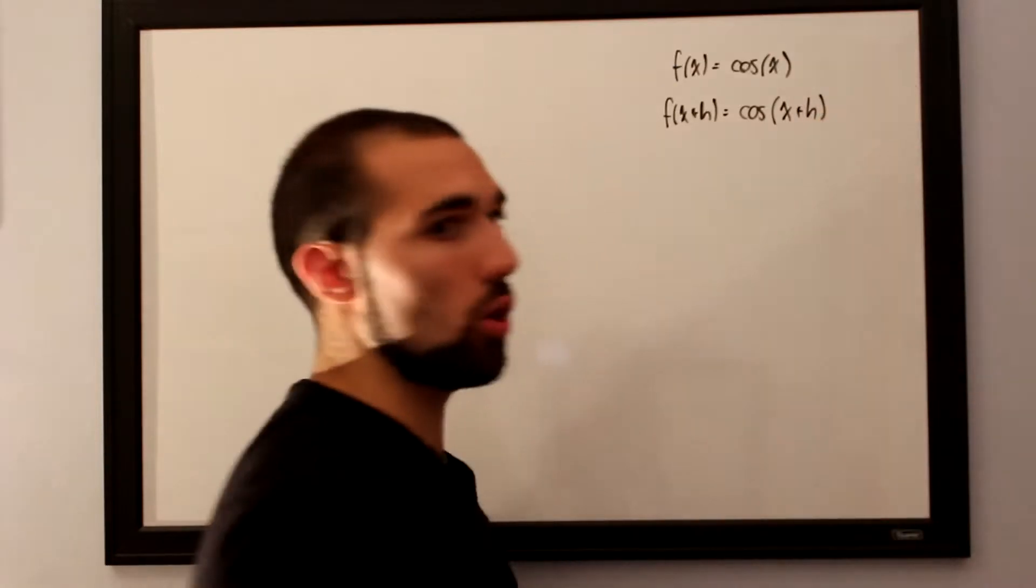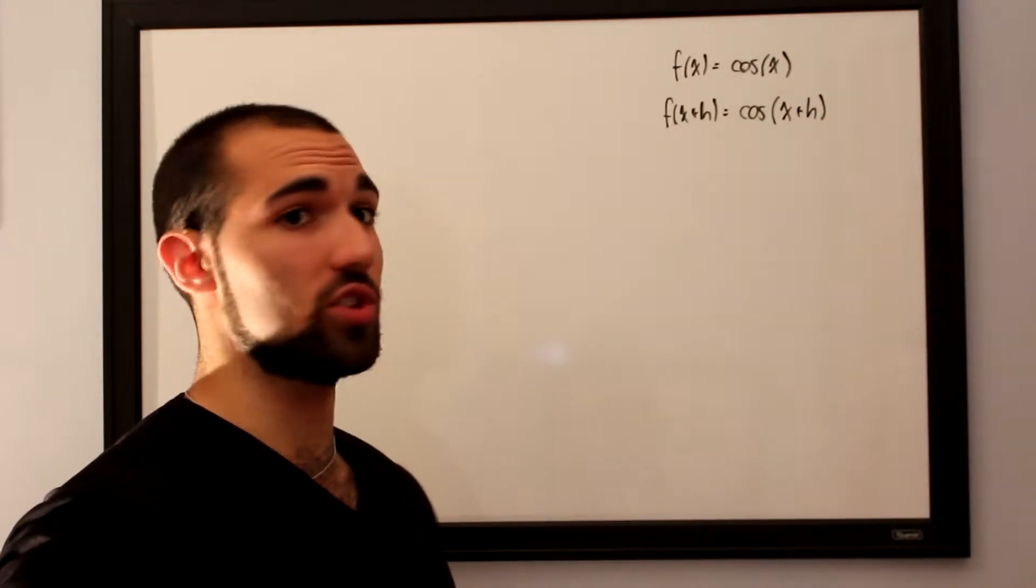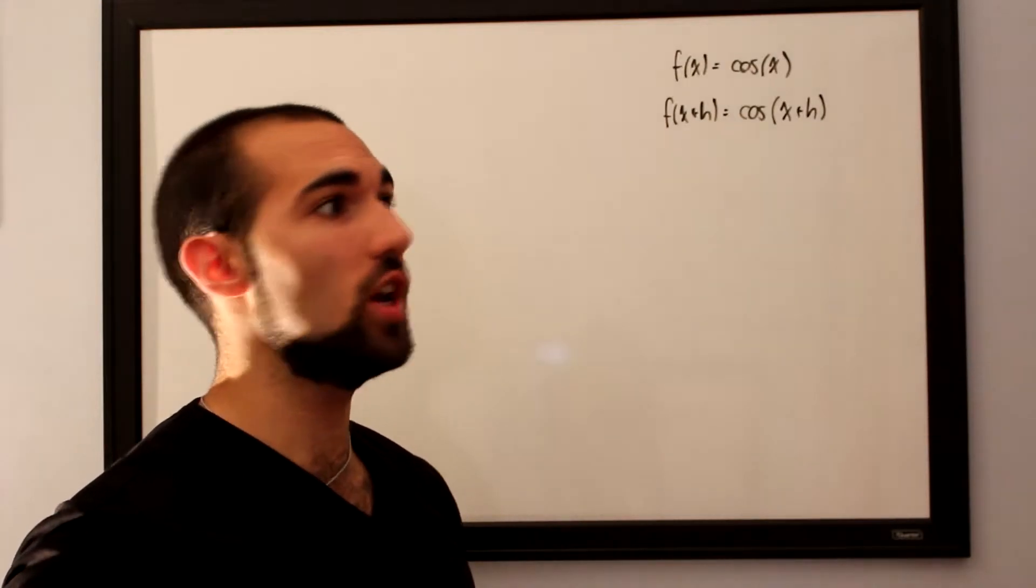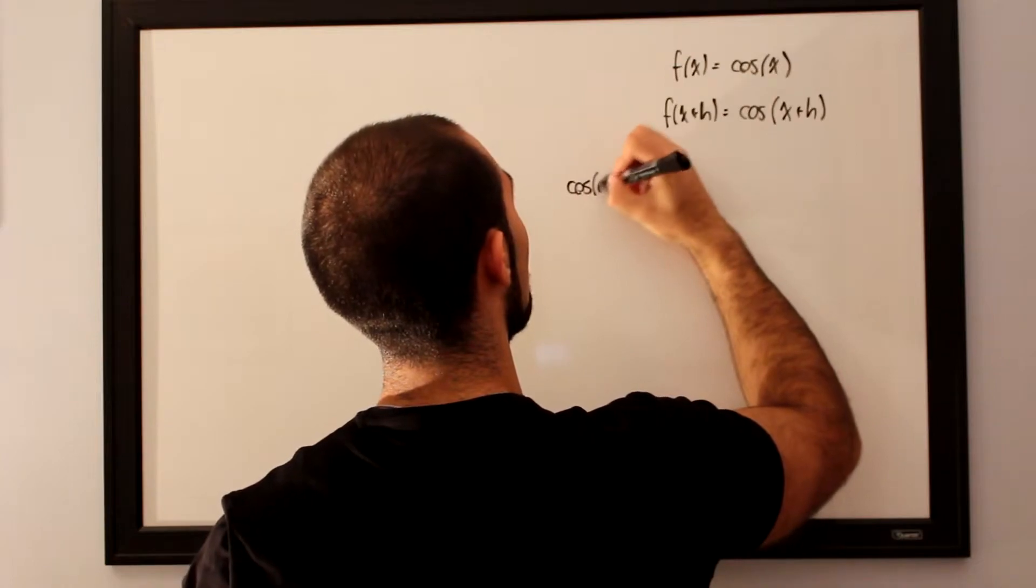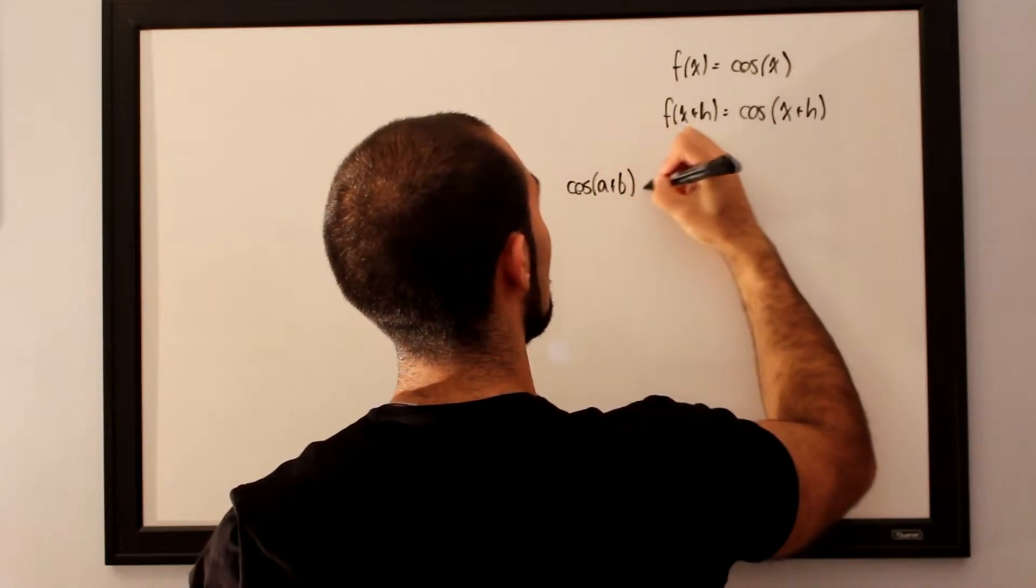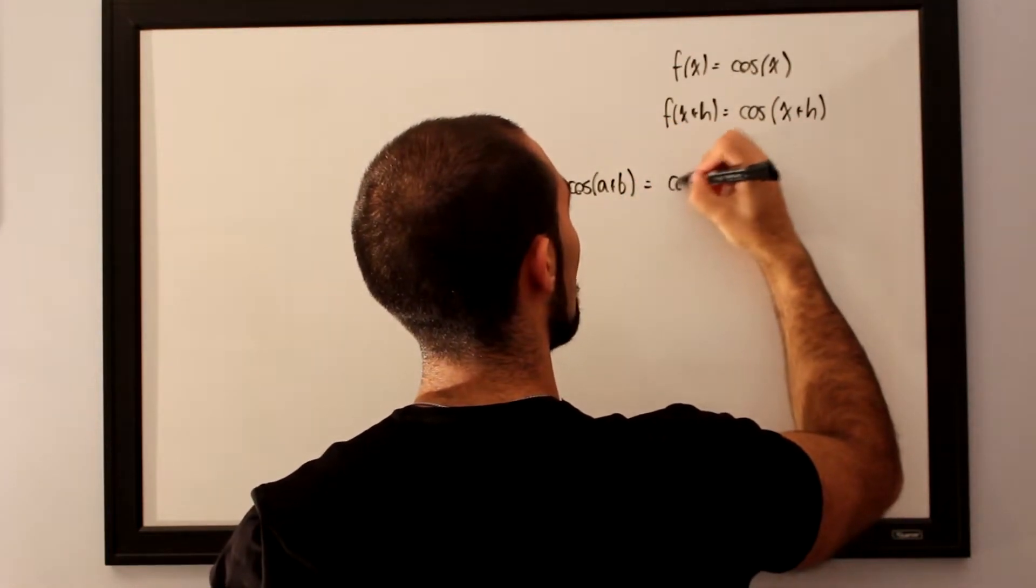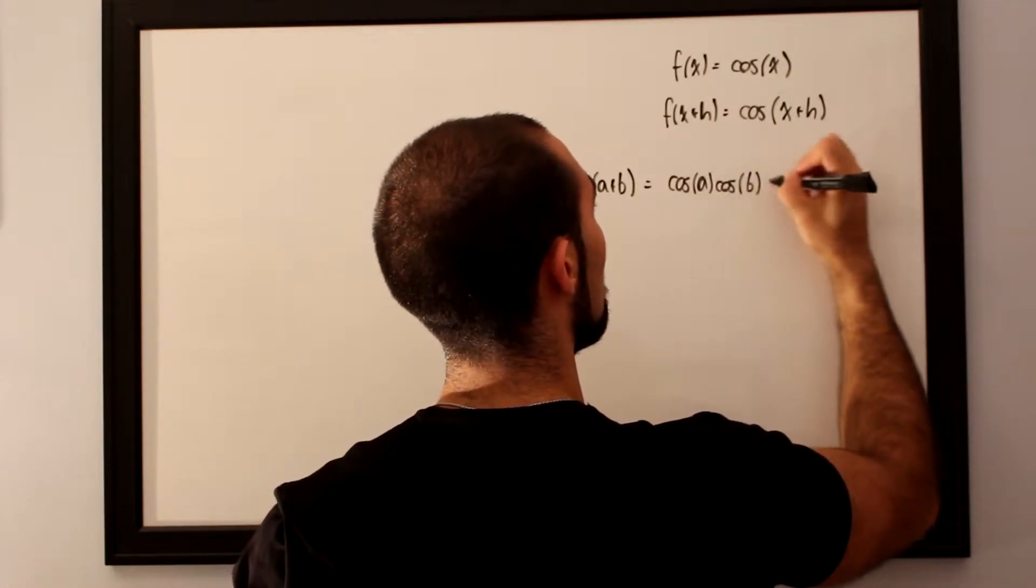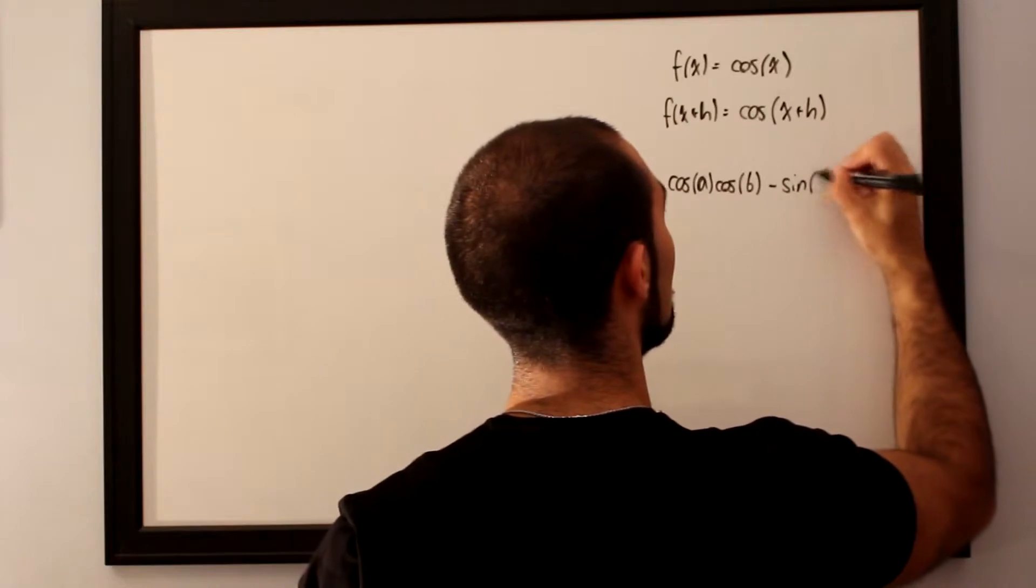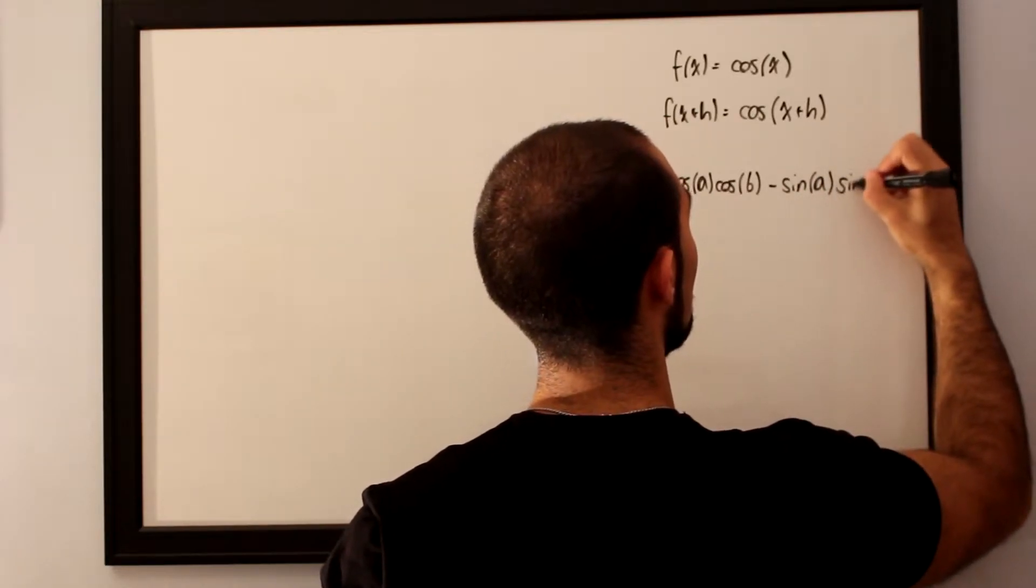And the addition of cosines, just like the addition of sines, is not as simple as just cosine of x plus cosine of h. The addition of cosines, which is cosine of a plus b, follows the rule cosine of a cosine of b minus sine of a sine of b.